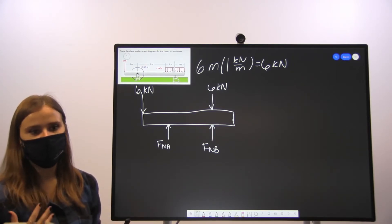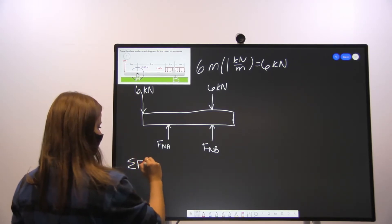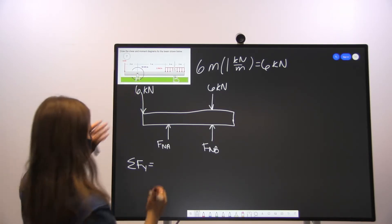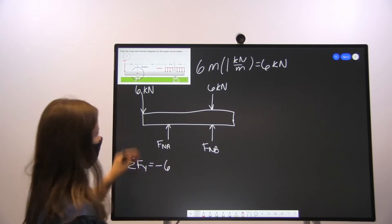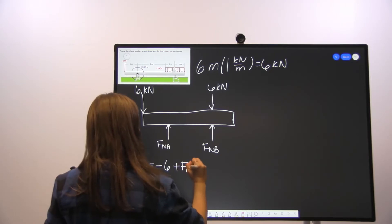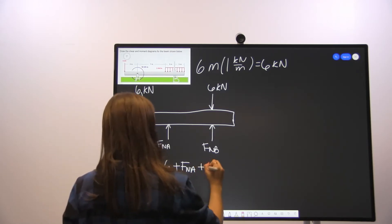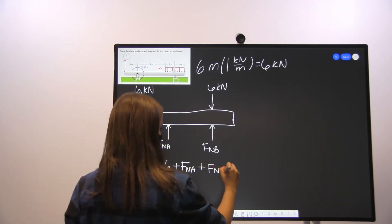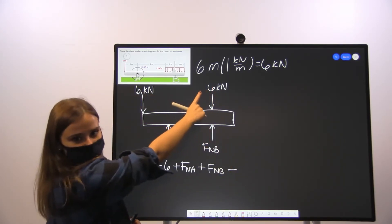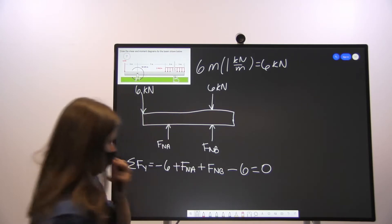Now that we have our free body diagram, we'll work on our equilibrium equations. For the sum of forces in the Y direction: starting at the far left we have minus six kilonewtons downward, plus the normal force at A upward, plus the normal force at B upward, minus the six kilonewton equivalent point load. This sum equals zero.